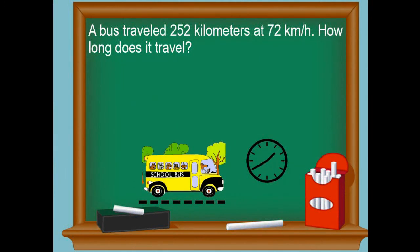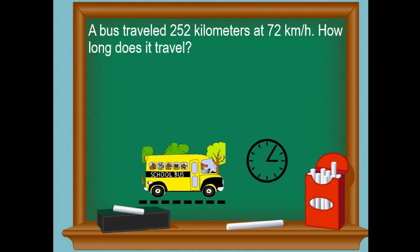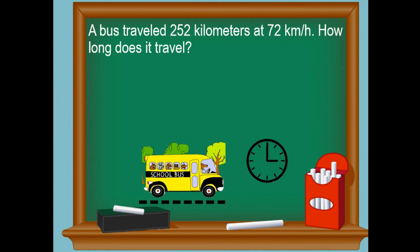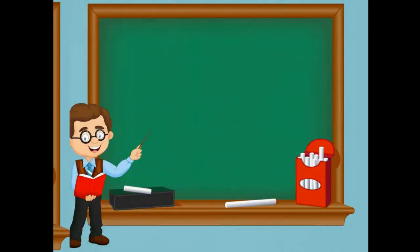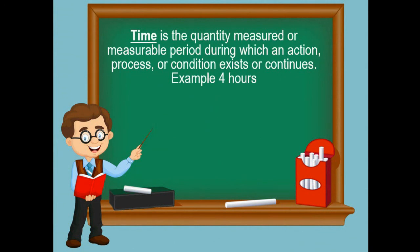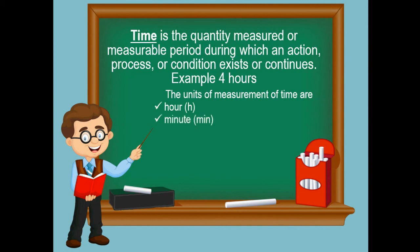Let's proceed to our third problem. A bus traveled 252 kilometers at 72 kilometers per hour — how long does it travel? On this problem you are going to find the amount of time. But what is time? Time is the quantity measured or measurable period during which an action, process, or condition exists or continues. Example: four hours.